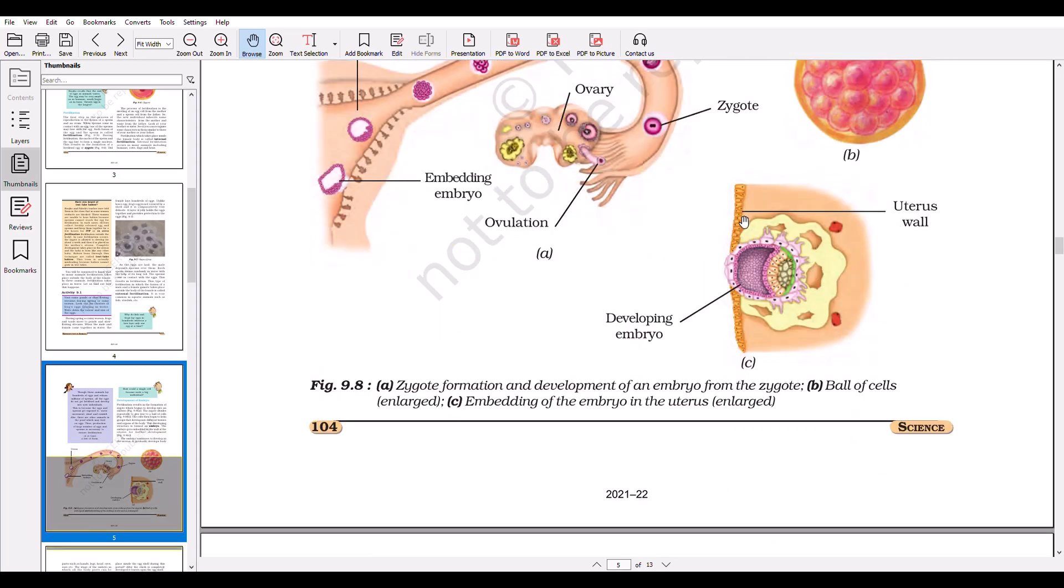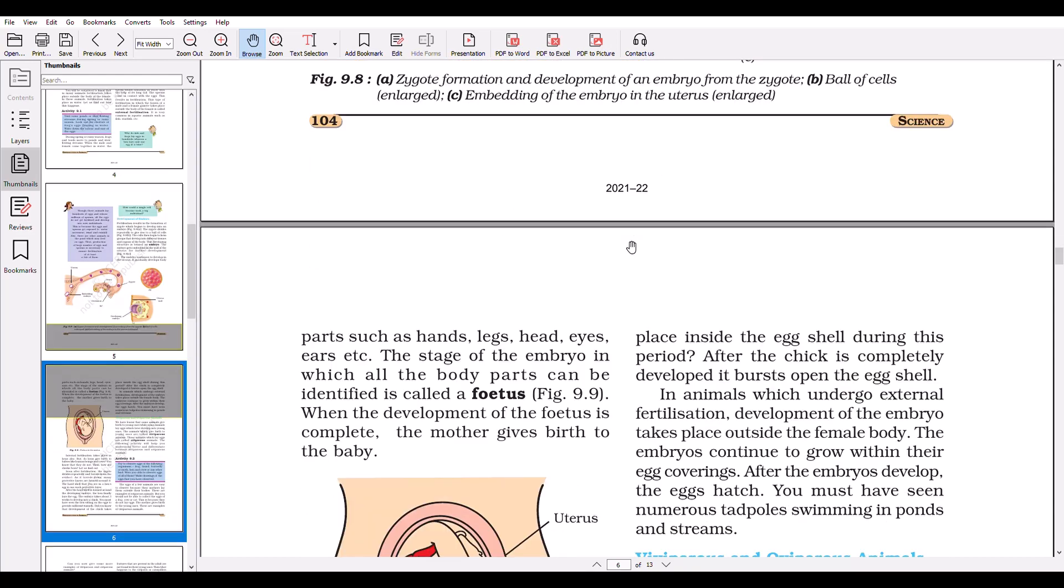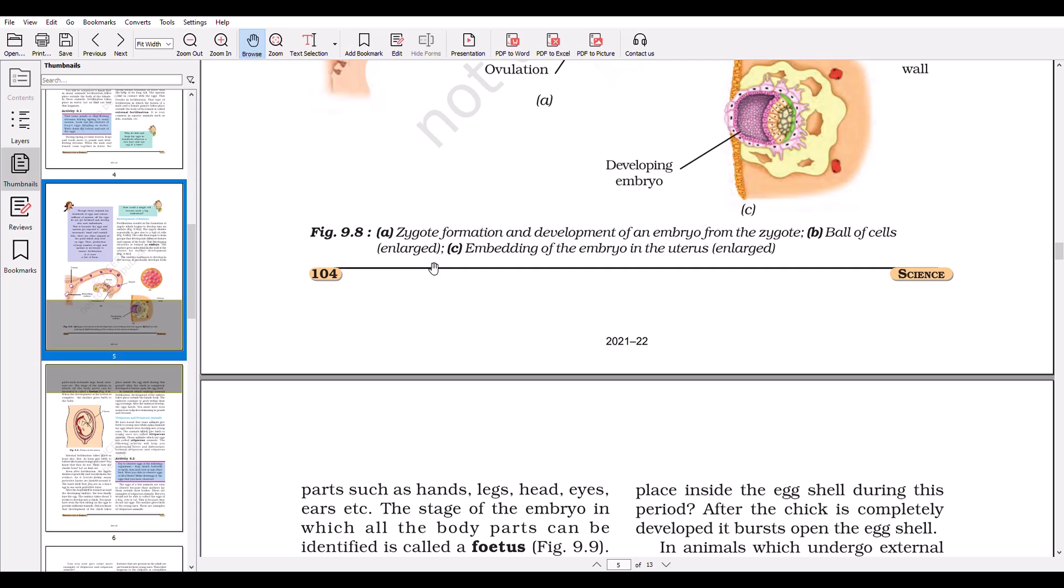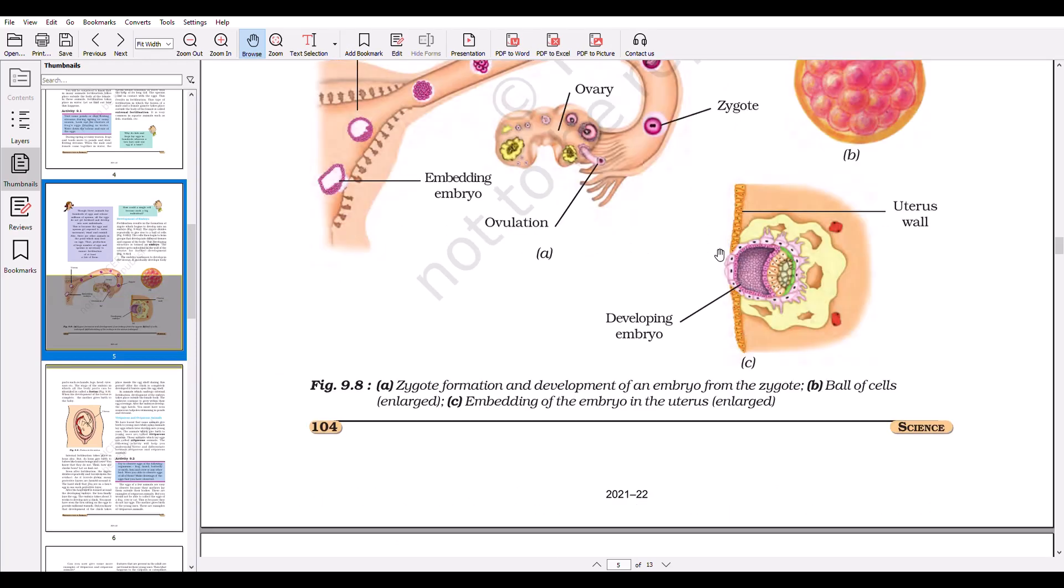This is the uterus wall developing with the embryo. The embryo takes food from the uterus and grows there. This is zygote formation and development of embryo from zygote: ball of cells enlarged in figure C, embedding of the embryo in the uterus enlarged.